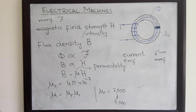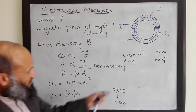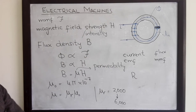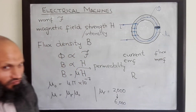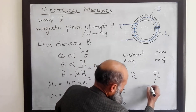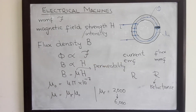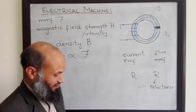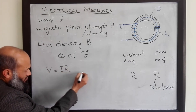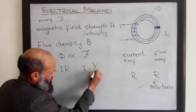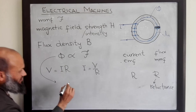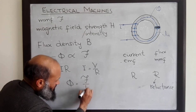In electrical circuits, the resistance to the flow of current is denoted by R, the resistor. In magnetic circuits, the resistance to the flow of flux is called reluctance, denoted by the letter R. In electrical circuits, current and voltage are related by V = IR, or equivalently, I = V/R. Similarly, in magnetic circuits, flux and MMF are related by: flux equals MMF divided by reluctance.